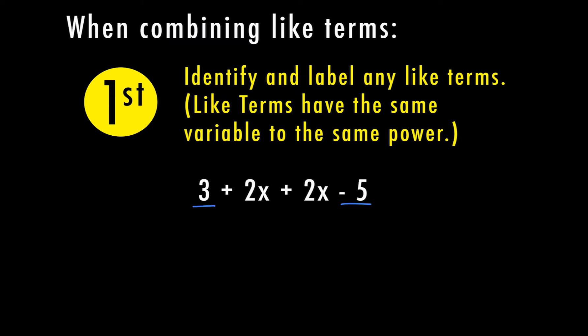I can combine the 2x with the 2x because those have the same variable and they're to the same power. When I talked about having a variable to the same power, we're talking about any variable in your problem that are the same. In this case, I have an x after both of these numbers, and my power is technically 1 because there's no power written there — you assume it's a 1. Since these are both just an x with no power written, we're going to be able to combine those.